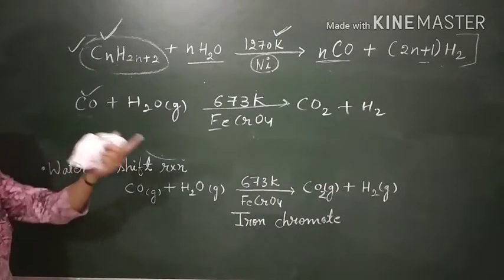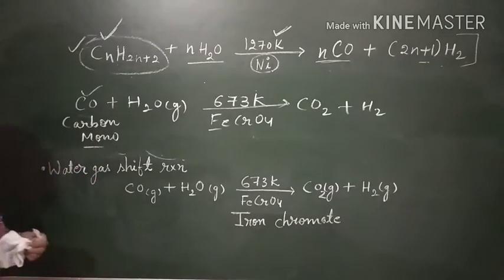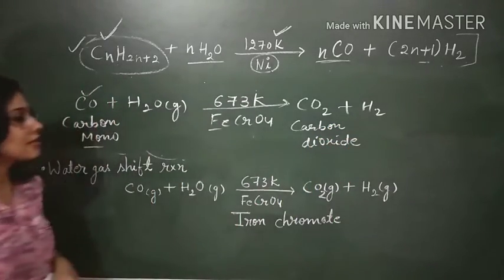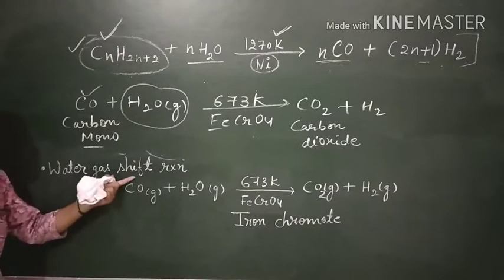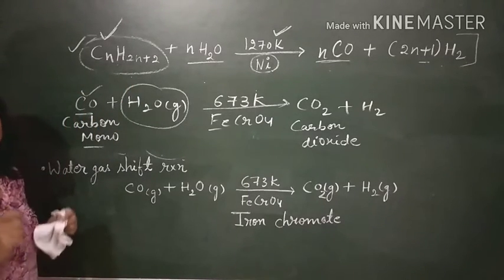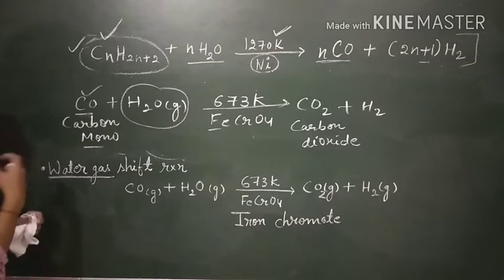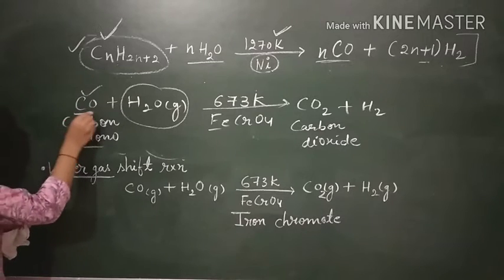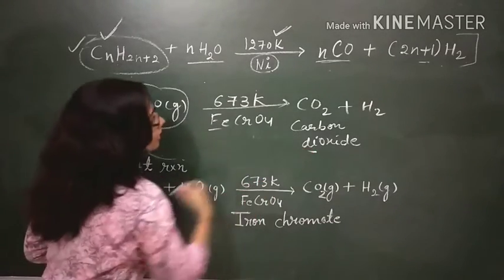We get CO₂ plus H₂ gas. Here there is a shift in the gas from carbon monoxide to carbon dioxide because of the steam — this is called the water gas shift reaction. CO was one of the gases present in the water gas mixture. To produce more dihydrogen, we used this CO gas and shifted it from carbon monoxide to carbon dioxide.